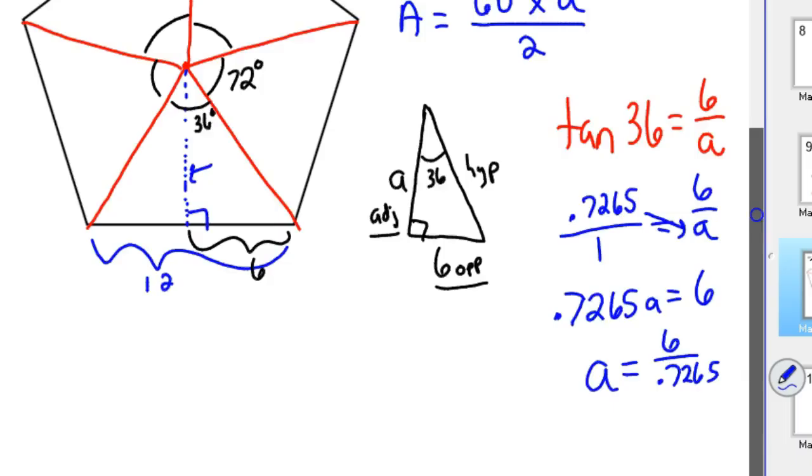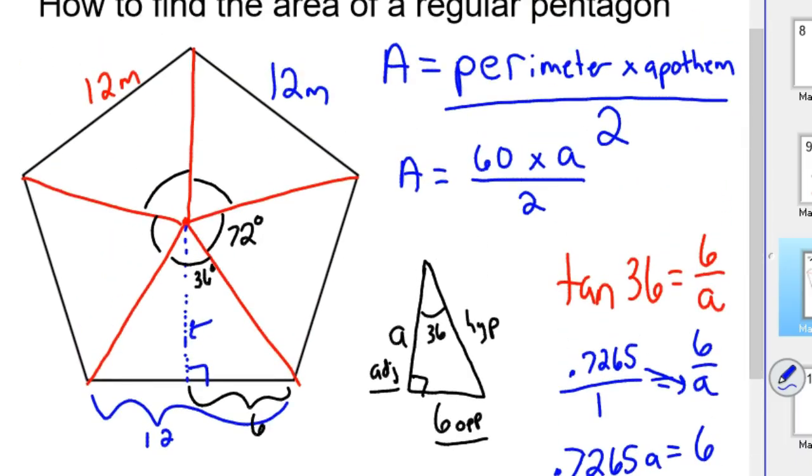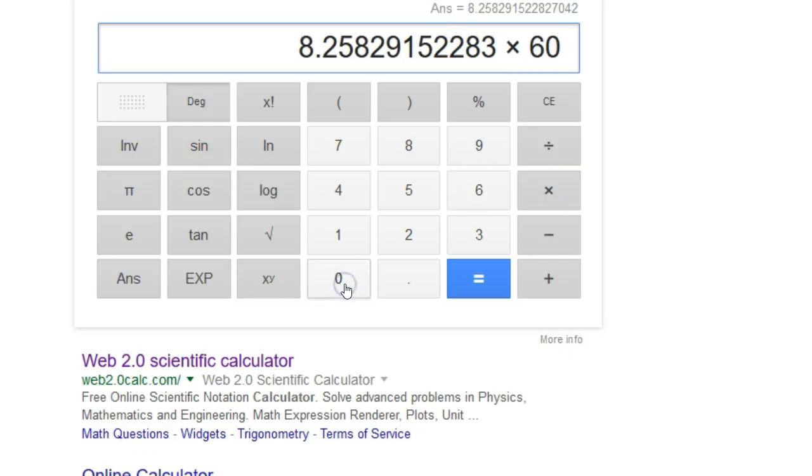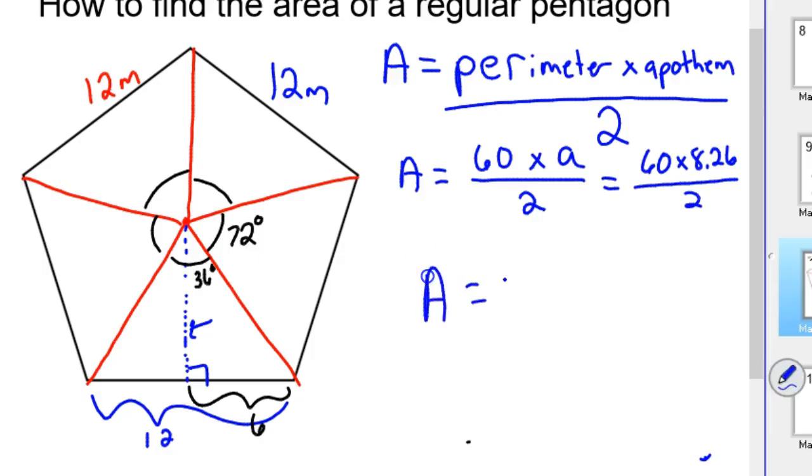So back to our formula. Now that you have the apothem, we can go ahead and plug that in. So this becomes area is 60 times 8.26 divided by 2. And I'll kind of eliminate some of this so we've got some room. So you get your calculator out again. 60 times 8.26 divided by 2. So we're going to take that number times 60, and then we're going to divide that in half. And so our approximate area is 247.7 meters squared.